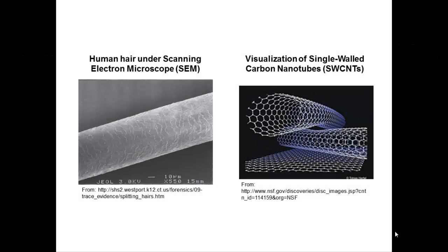On the left is a scanning electron microscope image of a human hair. Using the small scale in the image, you can see that the hair is tens of micrometers, or about 100 micrometers in diameter. On the right is a visualization of single-walled carbon nanotubes. Each nanotube is comprised of carbon atoms bonded to one another to form a strong cylindrical structure. Carbon nanotubes are used in a variety of products ranging from electronics and long-lived batteries to medical devices and composite plastics. Most single-walled carbon nanotubes have a diameter a little larger than one nanometer. A nanometer is 1,000 times, or three orders of magnitude, smaller than a micrometer.